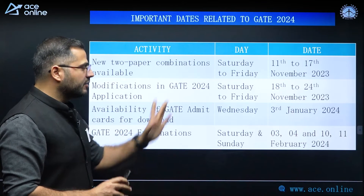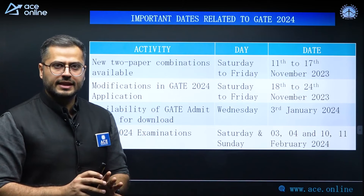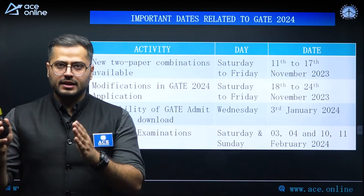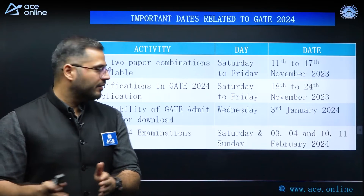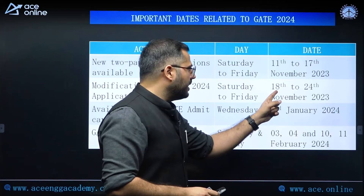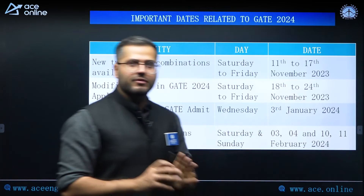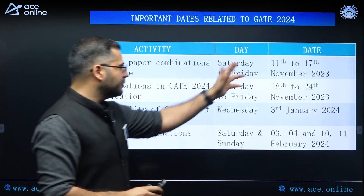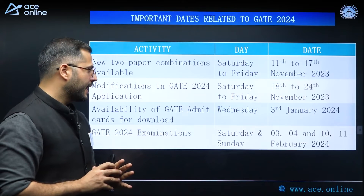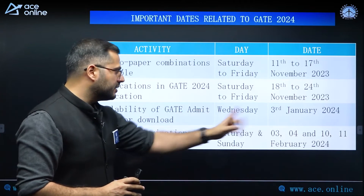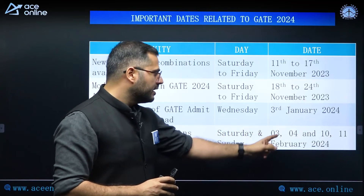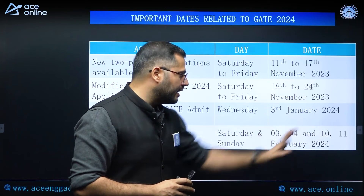Any other modifications — including those related to the previous version of two-paper combinations — can be done in the window of 18th November to 24th November. After the first window closes, the second window will open. The admit card will be released on 3rd January, and the GATE examination will be held on 3rd, 4th, 10th, and 11th of February.